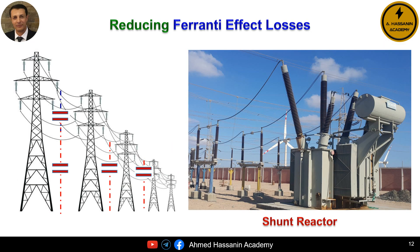Therefore, the only solution or the best method to treat and reduce the problem of voltage rise at the end of the transmission line is to avoid the occurrence of the Ferranti effect by connecting a shunt reactor at the receiving end of the transmission line. The main function of installing a shunt reactor is to absorb or consume the excess reactive power. Reducing the amount of reactive power means lowering the voltage value, and thus we can avoid the voltage rise. By doing so, we prevent the occurrence of the corona phenomenon or the limits of partial discharge on the overhead line insulators, transformers, and other electrical equipment. Consequently, this leads to a significant reduction in electrical losses.